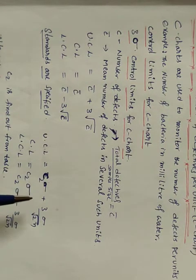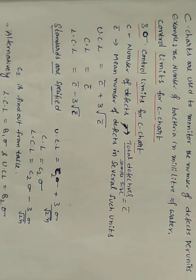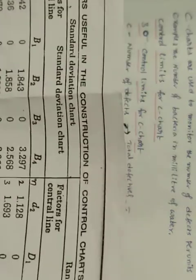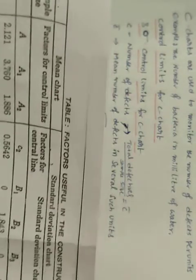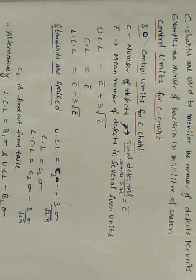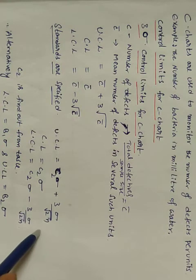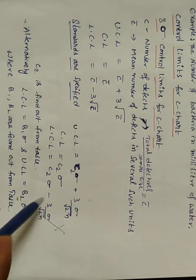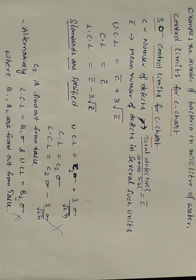When the standard is specified: UCL equals c-zero plus 3 times sigma divided by 2 root. We refer to the sigma value from the table. C2 is taken from the table — a Control Chart for Attributes table. The table includes columns for C chart: A2, C1, C2, B1, B2 under Standard Specified.